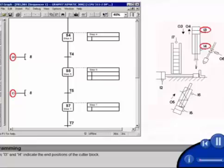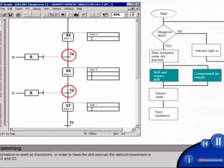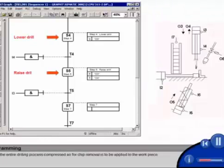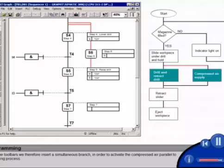Sensors I3 and I4 indicate the end positions of the cutter block. This information is used as transitions, in order to have the drill execute the vertical movement in steps S4 and S5. During the entire drilling process, compressed air for chip removal is to be applied to the workpiece. From the toolbars, we therefore insert a simultaneous branch, in order to activate the compressed air parallel to the drilling process.